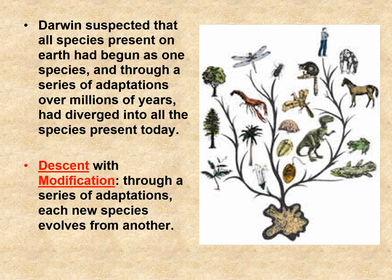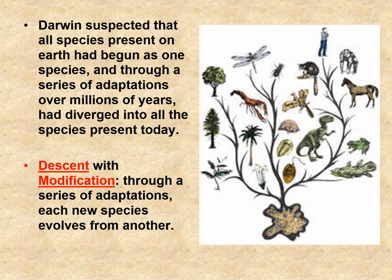Darwin suspected that all species present on Earth had once begun as one species. Evolutionists believe we all started as bacteria, then got creatures called protists, and from protists we got plants, animals, and fungi. Through a series of adaptations over millions of years, we have all diverged into the species present today — what Darwin called descent with modification, meaning you're a descendant but you have changed over time.